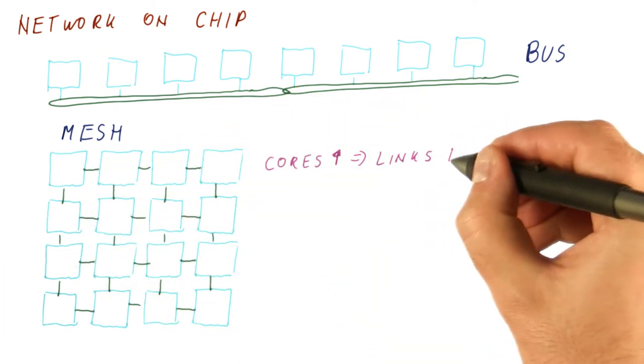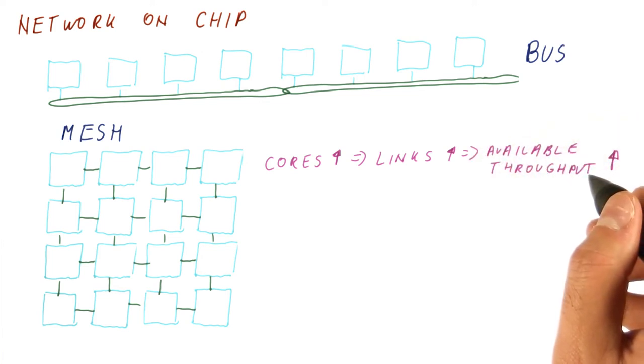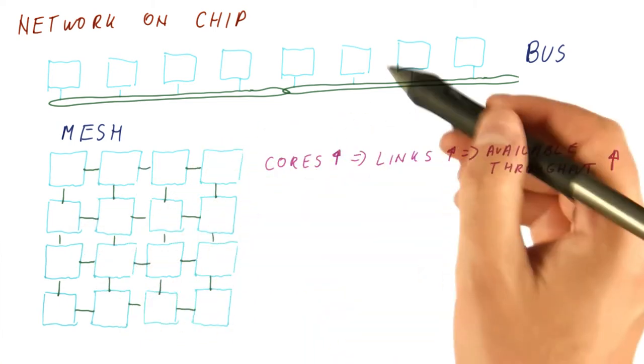So the number of cores grows, the number of links grows, and that allows the available throughput to grow. And that means that I can have many more cores than I could on the bus.